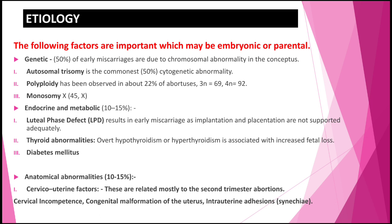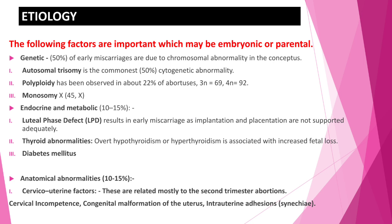Thyroid abnormalities — both hypothyroidism and hyperthyroidism — are associated with increased fetal loss; thyroid autoantibodies are often increased. Poorly controlled diabetes mellitus causes increased miscarriage. Anatomical abnormalities account for 10 to 15 percent; the cervicouterine factor is related to the second trimester abortion due to cervical incompetency and malformation of the uterus.